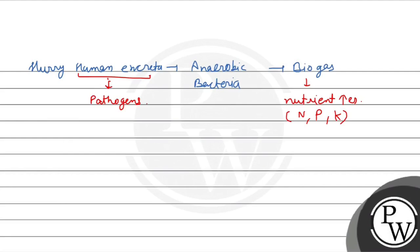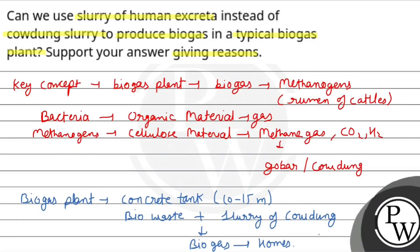Yes, we can do it — we can make biogas from human excreta. But it is also beneficial to use cow dung, which provides the cellulose. The cellulose of human excreta can be used — yes, we can do it. But there is a risk of pathogens, and the public perception is also a concern when using human excreta to produce biogas at home. I hope you understood very well. Best of luck. Thank you.